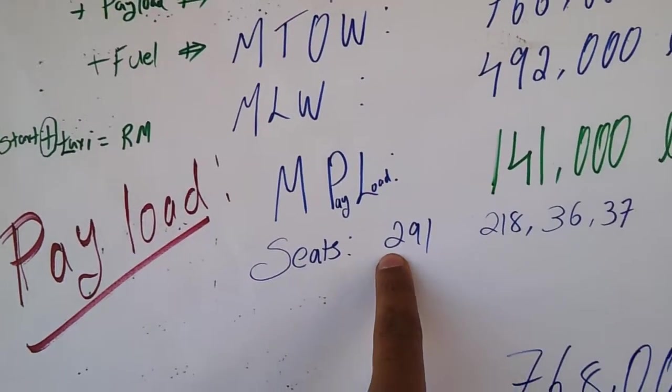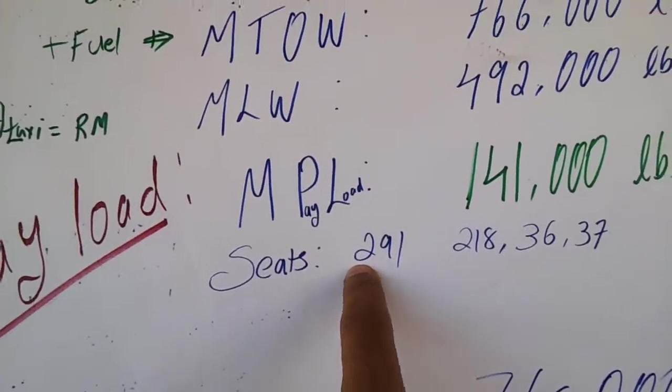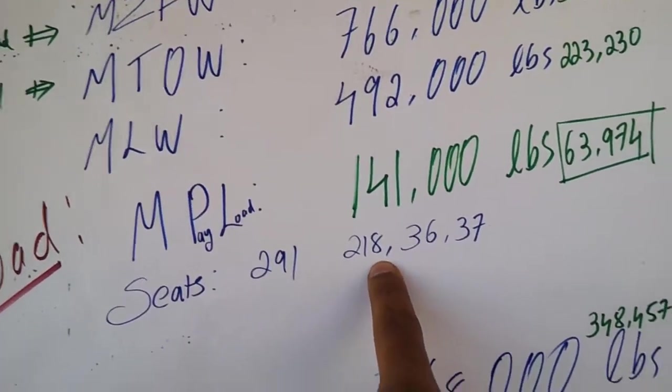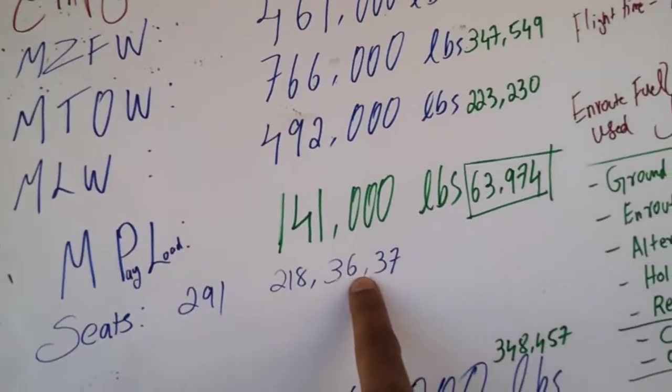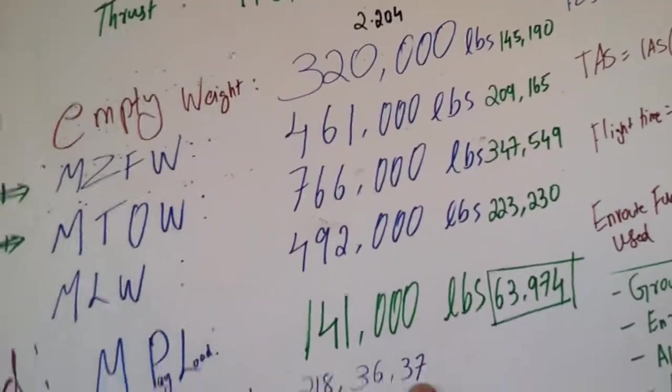The seats can be 301, 429, 291. In economic class it's 218, comfort 36, and first is 37.